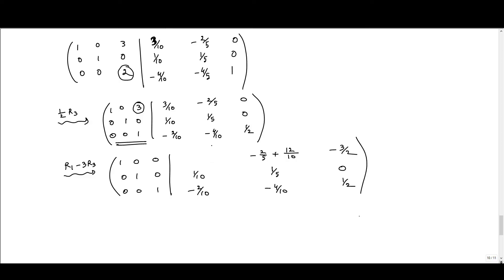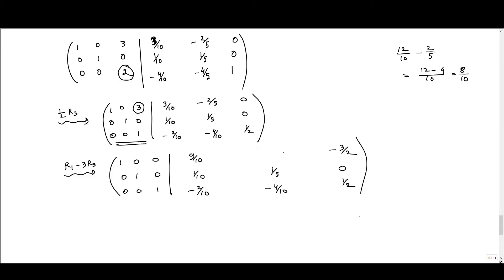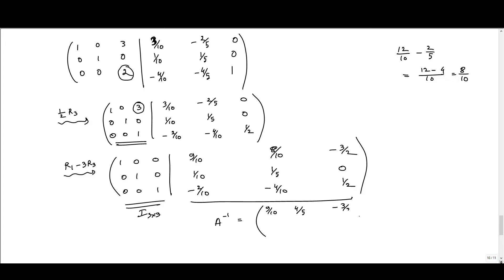Let us calculate the entries. That gives 9/10 — wait, working through the arithmetic: the first row right-side entries come to 9/10, 8/10 = 4/5, and −3/2. The second row is 1/10, 1/5, 0, and the third row is −1/5, −2/5, 1/2. On the left we have the identity matrix of order 3, and this 3×3 matrix on the right is our A inverse. You can verify that A times A inverse equals the identity. Thank you.